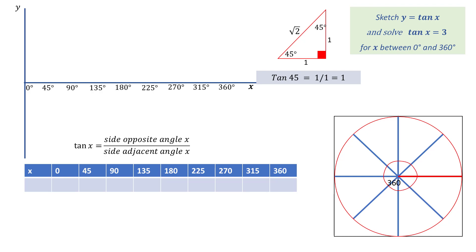These values form the divisions on the horizontal axis. The vertical axis should include 1, since we know that tan 45 equals 1, up to at least 3, since we need to solve when tan of x equals 3, so we label as shown.